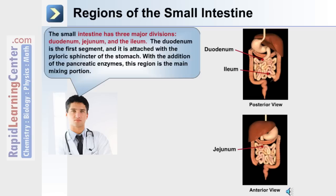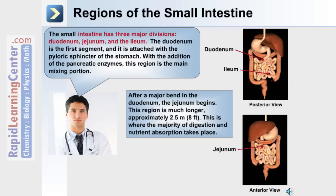The duodenum is the first segment, attached at the pyloric sphincter of the stomach. The addition of pancreatic enzymes in this region makes it the main mixing portion. After a bend in the duodenum, the jejunum begins. This region is much longer, approximately 2.5 meters or 8 feet, and is where the majority of digestion and nutrient absorption takes place.